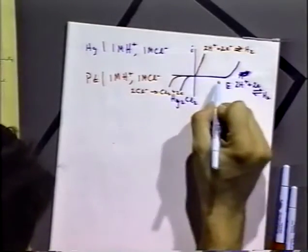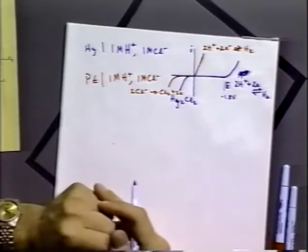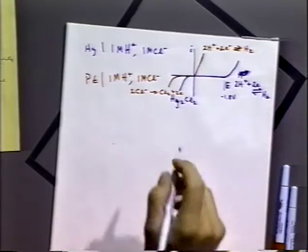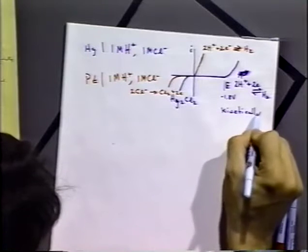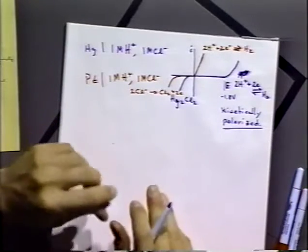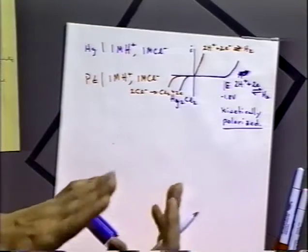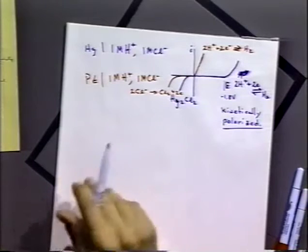If we take this system, we find that we have to be at about minus 1.8 volts to get that reaction to occur. We call this system kinetically polarized. We use the term polarized to indicate a system where the electrode has acquired a potential — here we're polarizing the electrode by applying an external potential. It's polarized because it can be held at that potential without any significant current flowing. The platinum electrode cannot be kinetically polarized at a very negative potential in this system because the reaction occurs rapidly.